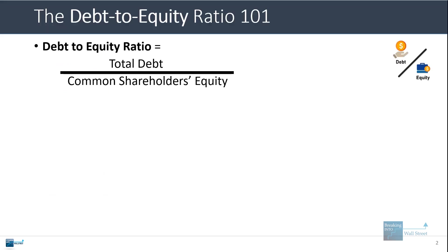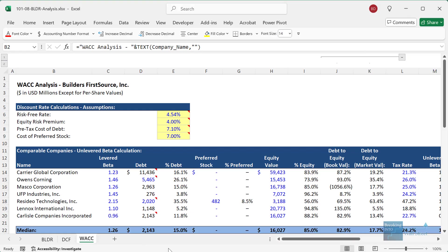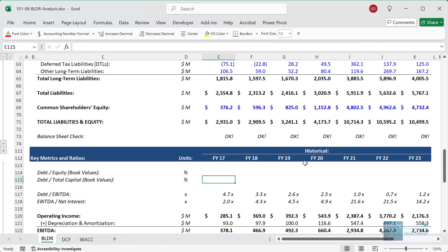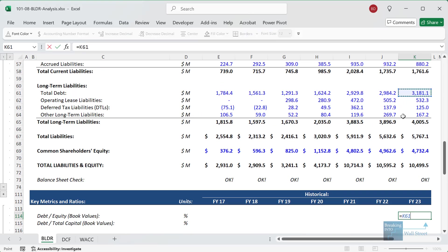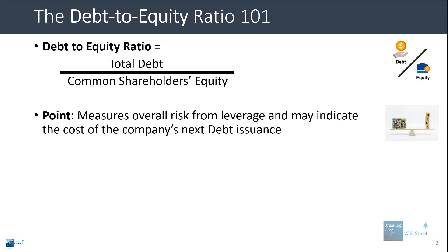The basic definition is pretty simple. The debt to equity ratio is defined as the company's total debt divided by its common shareholder's equity. I'm going to pull up financials for Builder's First Source, in the building materials business. If we take their total debt and divide by their common shareholder's equity for their most recent fiscal year, that gives us a debt to equity ratio of 67%. This ratio measures the overall risk from leverage, and it could indicate the cost of the company's next debt issuance if they choose to issue debt in the future.